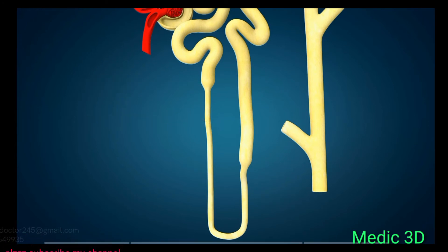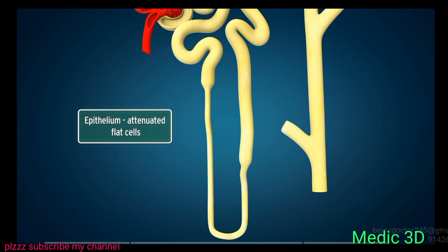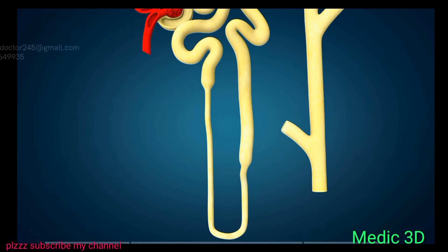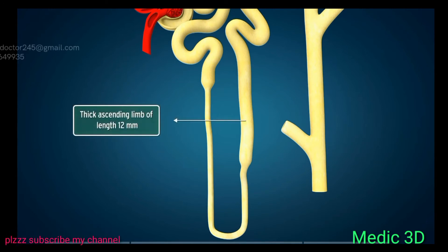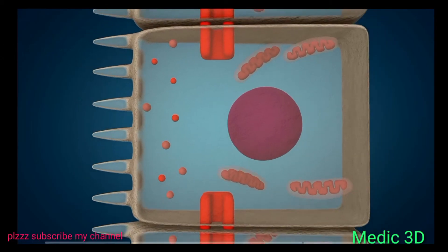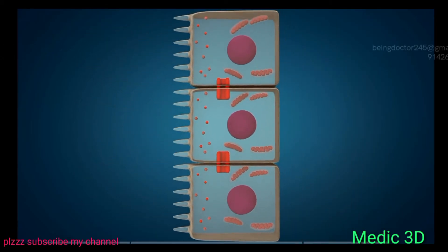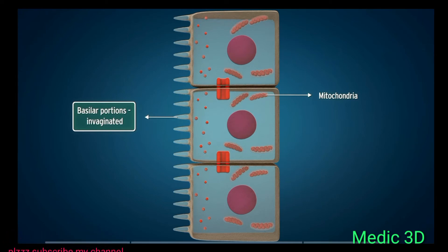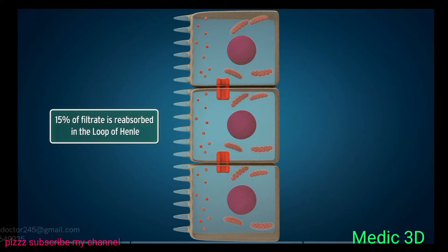The ascending limb continues into a thin segment where the epithelium consists of attenuated flat cells. The thin segment of the loop is 2 to 14 mm in length. From this segment arises the thick ascending limb of 12 mm length, which is formed by low cuboidal epithelium. The cells of the ascending limb have numerous mitochondria, and the basilar portions of their cell membranes are extensively invaginated. About 15% of filtrate is reabsorbed in the loop of Henle.